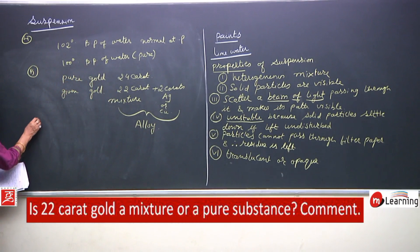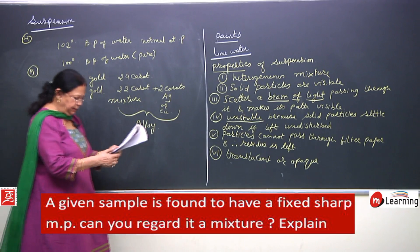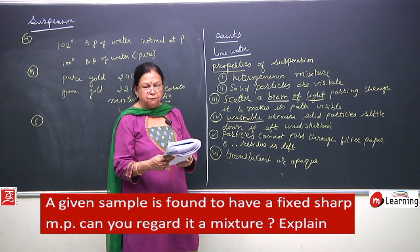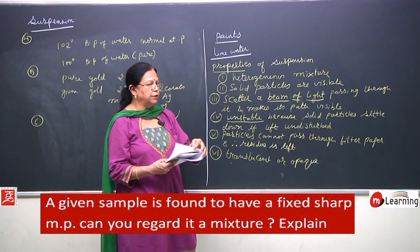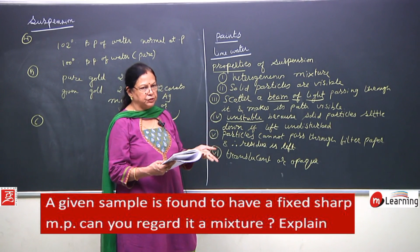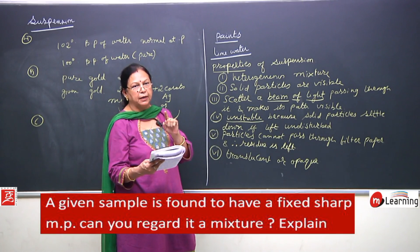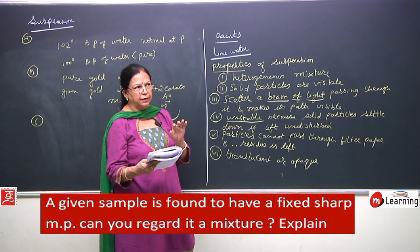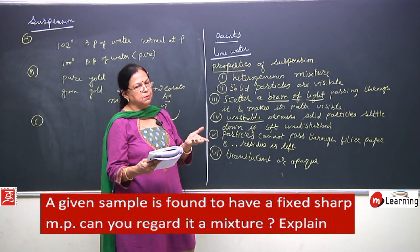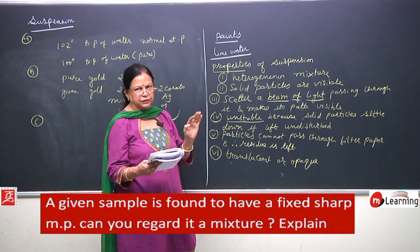The sixth problem: a given sample is found to have a fixed sharp melting point. Can you regard it as a mixture? A pure substance has a fixed sharp melting point, a fixed sharp boiling point, and a fixed defined density.